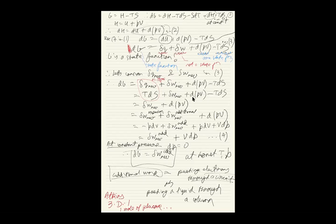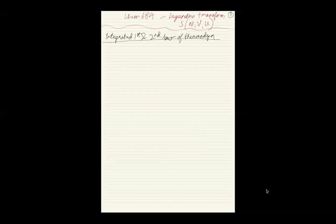We've done the first and second laws of thermodynamics. What I'm going to show next is an integrated first and second law — one equation that captures both. This will also help you see why Kevin's problem — where the first part asked you to prove something — you couldn't do without using entropy or Maxwell relations. Other professors confirmed you cannot do it without entropy.